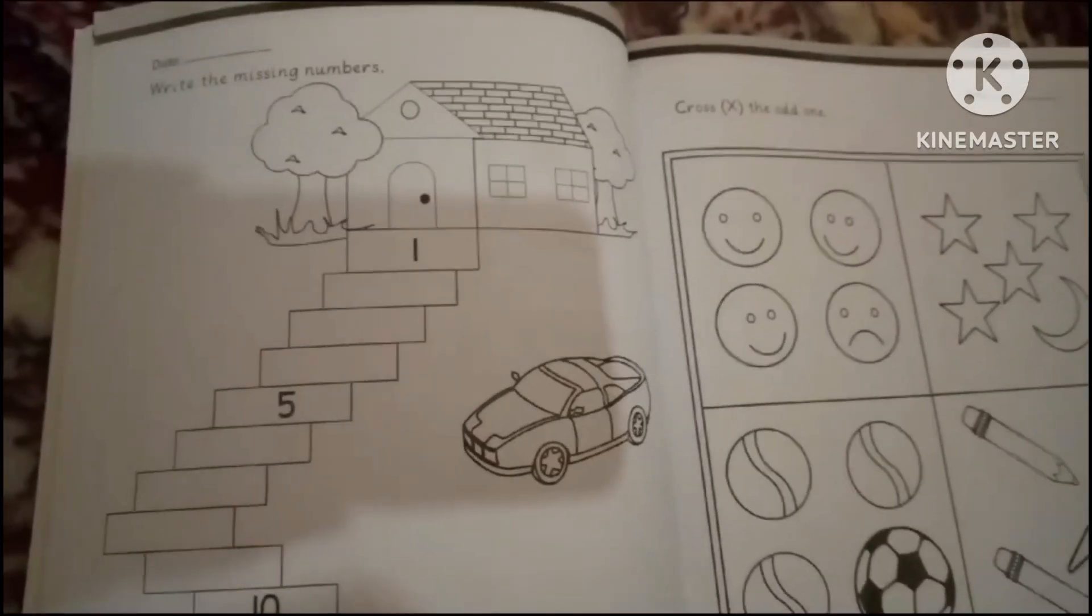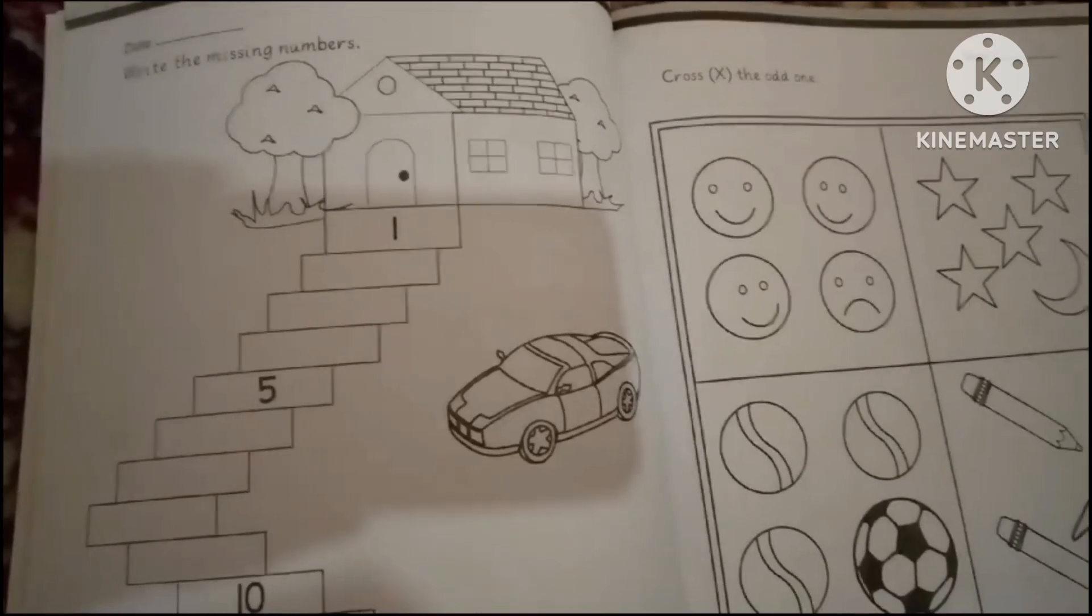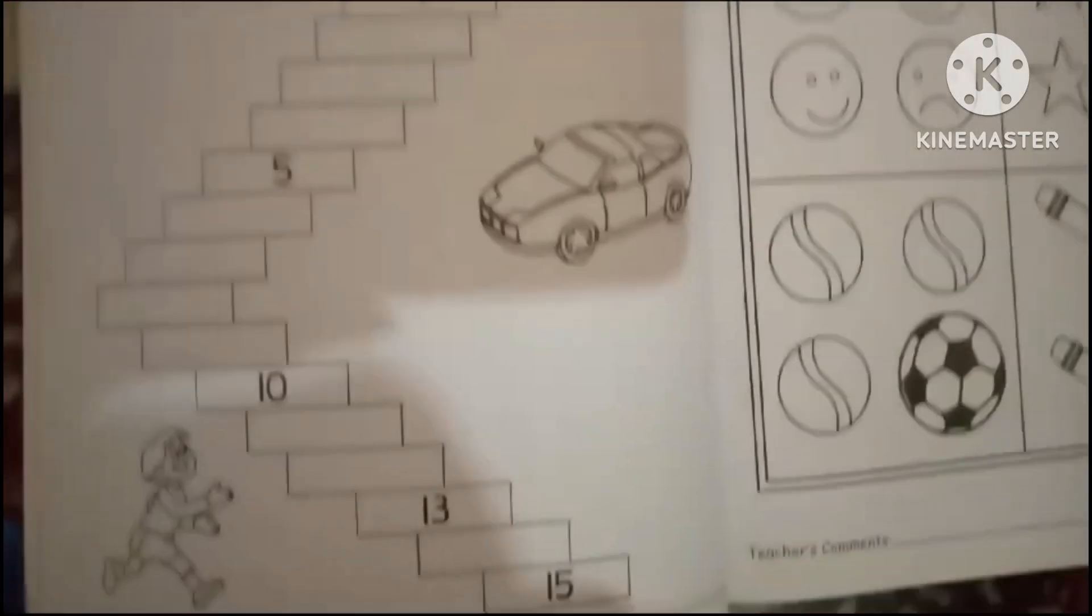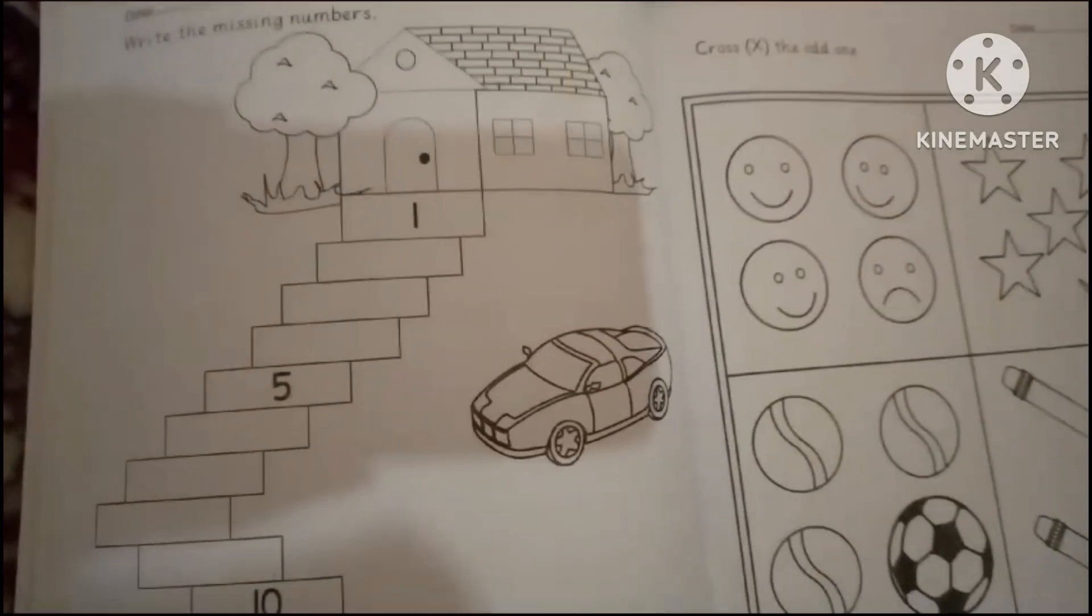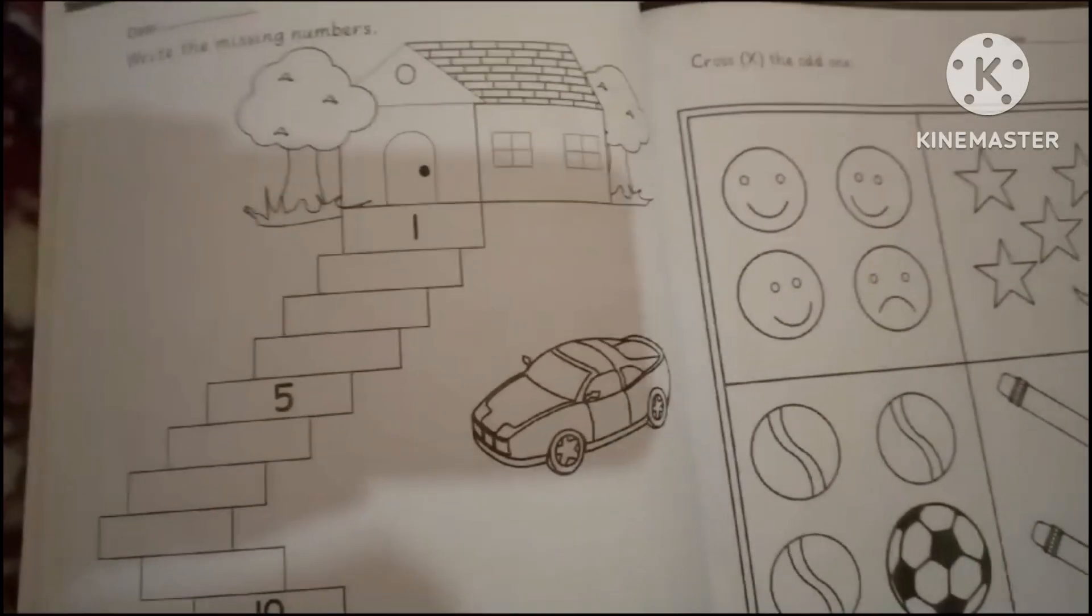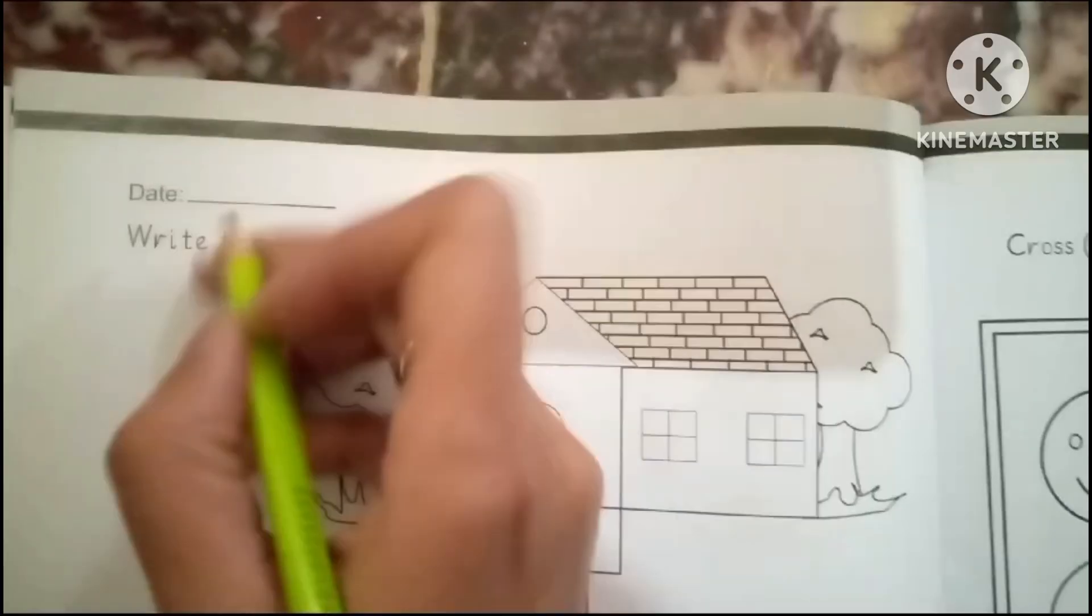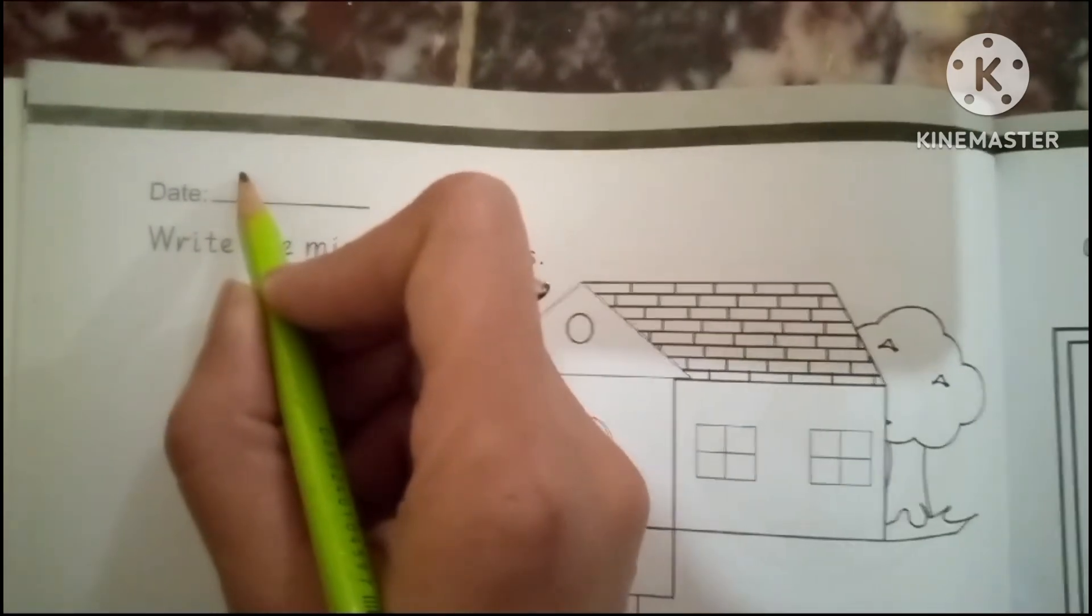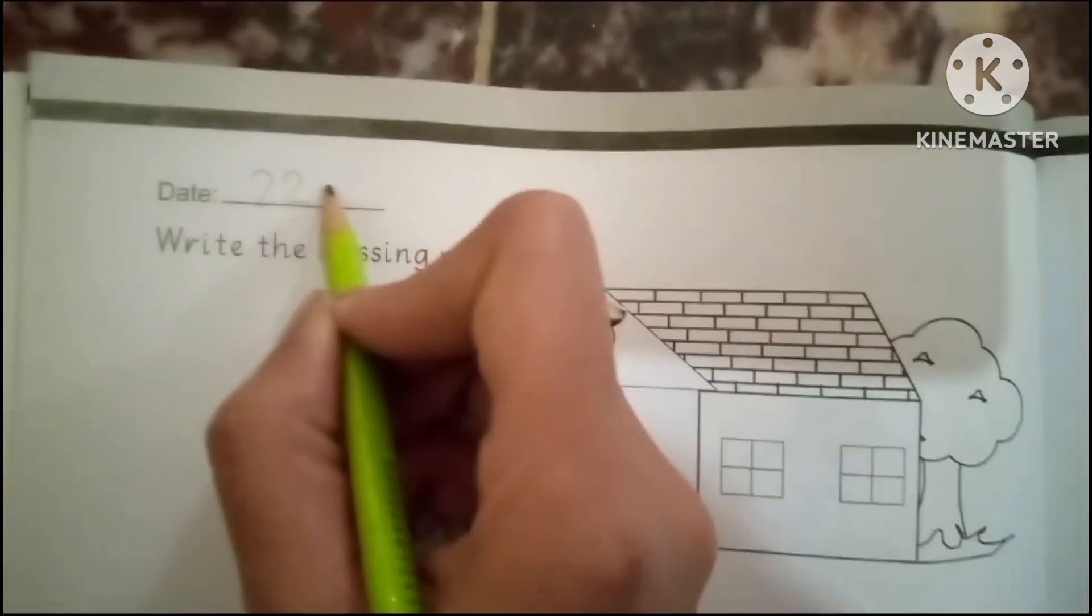Hello everyone, today we are going to learn about the missing numbers from 1 to 15. We are going to write the missing numbers. First, we are going to write the date. Today is 12-12-2023.